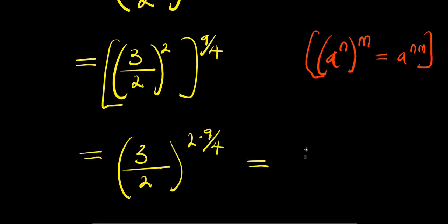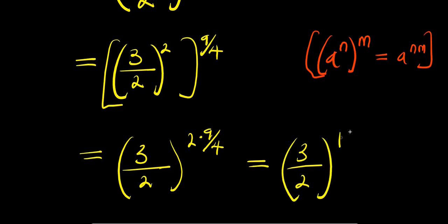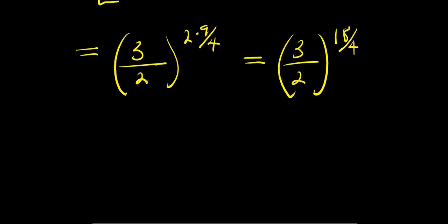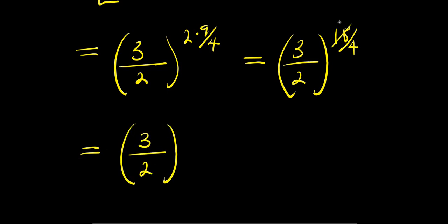And this will give us 3 divided by 2 raised to the power of 18 divided by 4. So from here, we can simplify: 2 cancels with 18, leaving 3 divided by 2 raised to the power of 9 over 2.